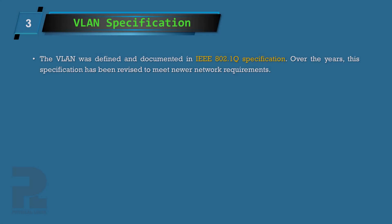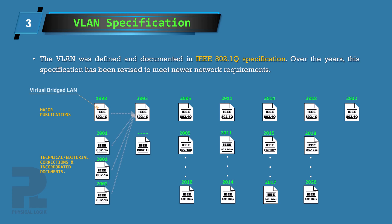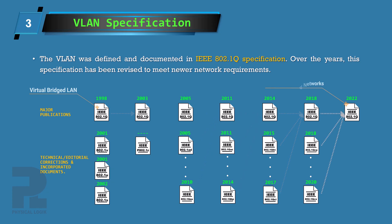VLAN is a standard technology defined and documented in the IEEE 802.1Q specification. The first publication, titled Virtual Bridge Local Area Network, was released in 1998. Subsequently, this standard was revised to incorporate other specifications and meet more recent network requirements. As of today, the most recent publication of this specification is Bridges and Bridge Networks, defined in IEEE 802.1Q 2022.